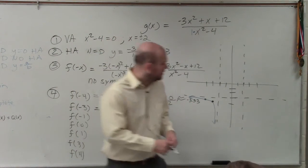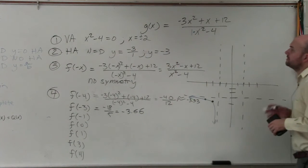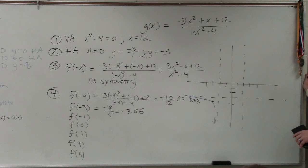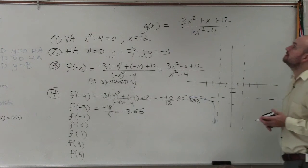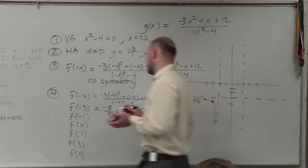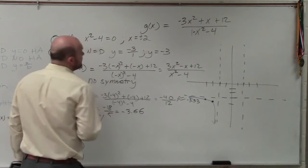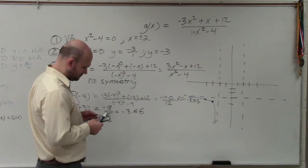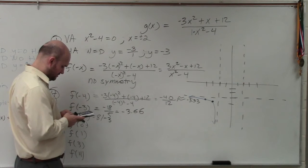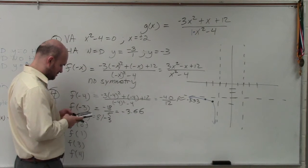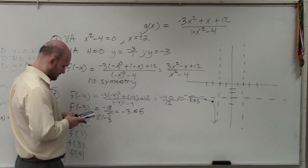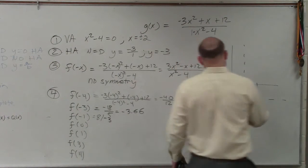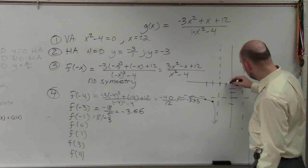Let's do negative 1. If I plug in negative 1, negative 1 squared is 1. 1 times negative 3 is negative 3. Plus negative 1 is going to be negative 3, negative 4. So that's going to be 8 over negative 3. So at negative 1, I'm at negative 2.66.